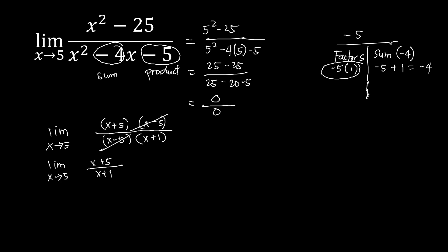Since we're done with the cancellation, we do direct substitution: 5 plus 5 over 5 plus 1, which equals 10 over 6. We can reduce this fraction since the common factor is 2, dividing both by 2 to get 5 over 3. So the limit is 5 over 3.